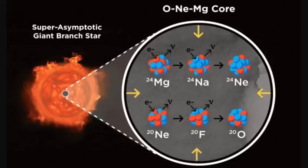What you're looking at here is an artist's impression of this super-asymptotic giant branch star and its core, made up of oxygen, neon, and magnesium. This is the end state of stars around 8 to 10 solar masses, whose core is pressure-supported by electrons. When the core becomes dense enough, neon and magnesium start to eat up the electrons, reducing the core pressure and inducing a core-collapse supernova explosion.